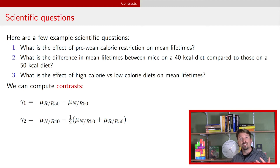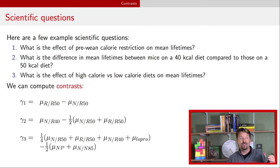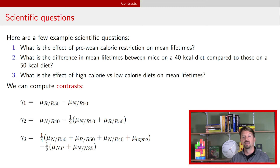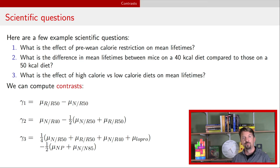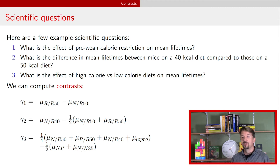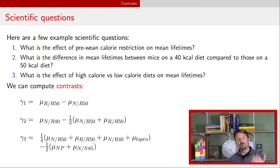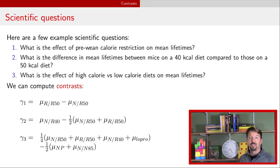For question three, we combine all of the calorie-reduced diets — those with 40 and 50 kilocalories, including low pro — and take the average of those mean lifetimes, comparing that to the NP and NN85 group. If that average difference is zero, we might say there's no effect of high versus low calorie. We don't yet have the tools to answer this kind of question, but these calculations are what we're going to be doing.